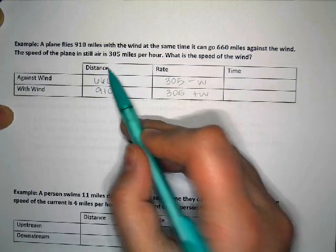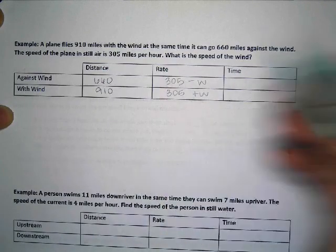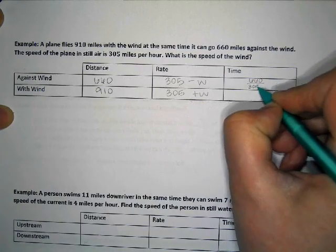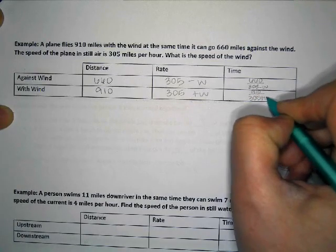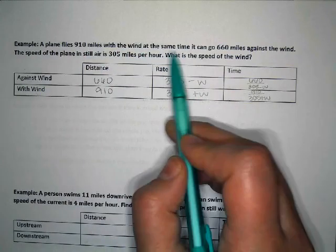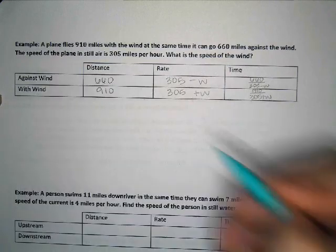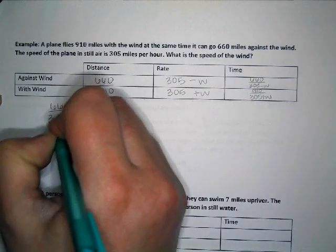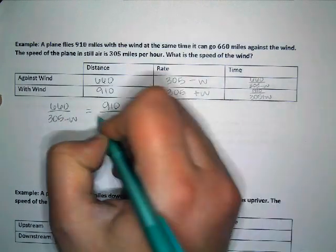We know that distance is rate multiplied by time. That means that time is distance divided by rate. So distance divided by rate, and since it said in the sentence that it can do this flight at the same time, that it can do it in the same amount of time, that means that these two are equal to each other. So these two amounts of time are equal to each other.